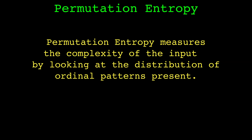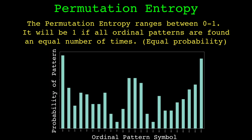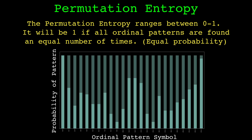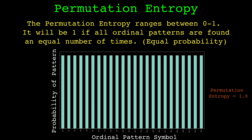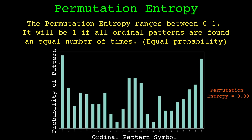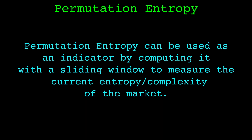A very common application of ordinal patterns is permutation entropy, which gives a measure of the complexity of a time series. We compute permutation entropy with the probability distribution of the ordinal patterns found. If we find all ordinal patterns an equal number of times, we will have an entropy of 1 — in practice this is very rare. But the closer the permutation entropy is to 1, the closer the distribution is to uniform. We can compute permutation entropy in a rolling window to measure the complexity of recent price behavior.